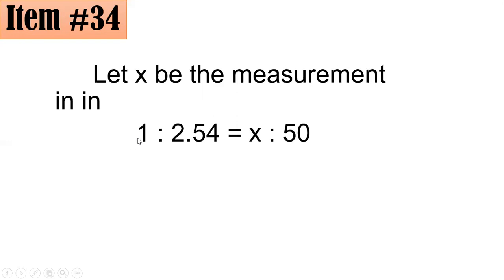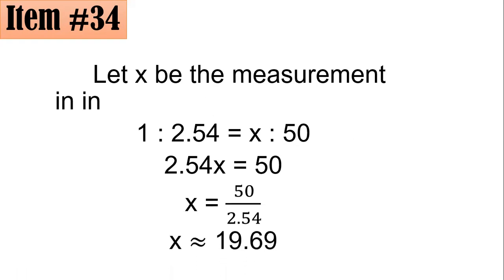So this is inches to cm. By that, we have 1 inch is to 2.54 cm as x inches is to 50 centimeters. Product of the means equals product of the extremes. So 2.54 times x is 2.54x, 1 times 50 is 50. Since we're solving for x, we will divide both sides by 2.54. 50 divided by 2.54 is approximately 19.69, and that is letter C. 50 centimeters is approximately 19.69 inches.